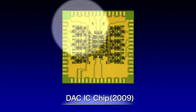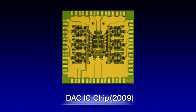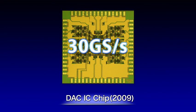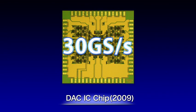This DAC IC chip, completed in 2009, integrates about 2,000 transistors. This device successfully achieved 30 gigasamples per second, or the generation of 30 billion multi-level signals per second.